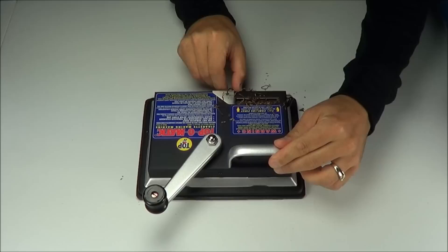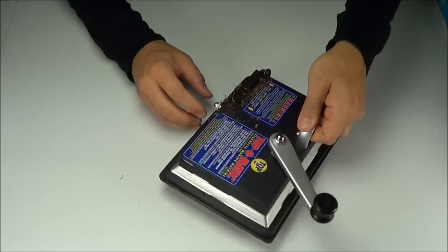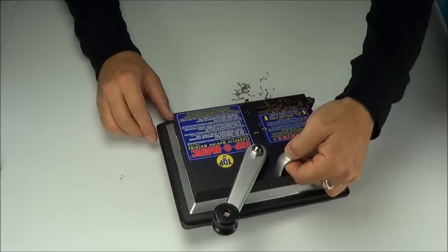Now to do the hundred size cigarette, you just loosen the nut right here. It allows this plate to come off.